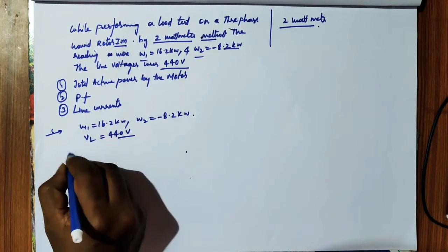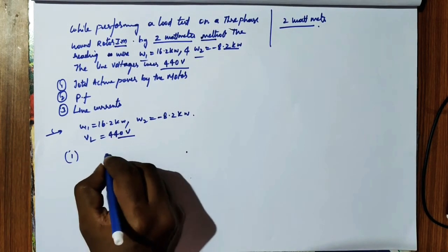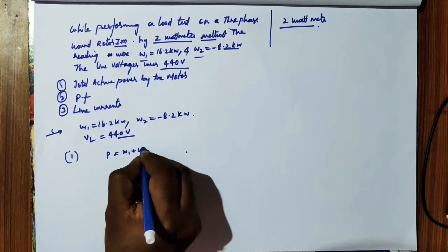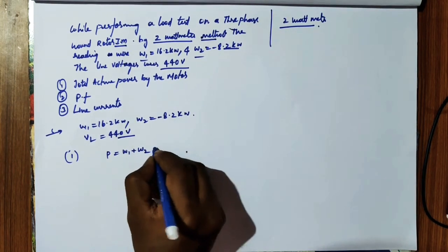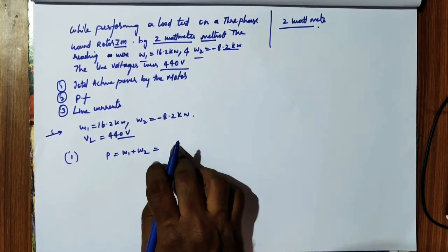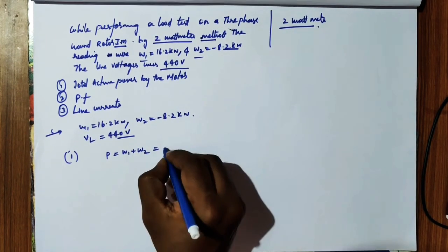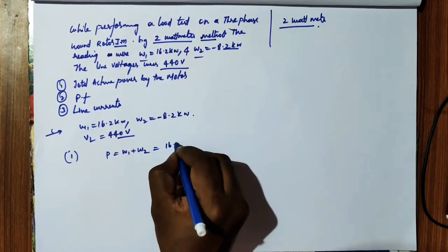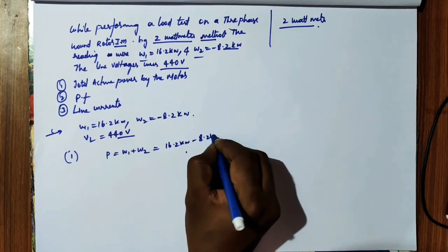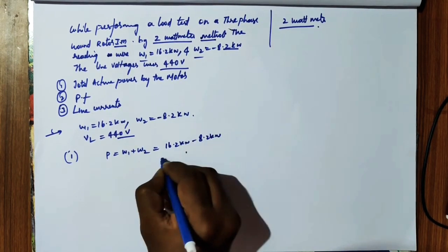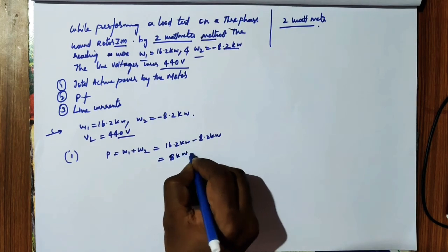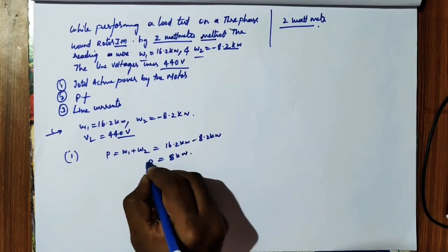Total active power P = W1 + W2. Substituting: 16.2 kilowatts + (-8.2 kilowatts) = 8 kilowatts. So the total active power is 8 kilowatts.